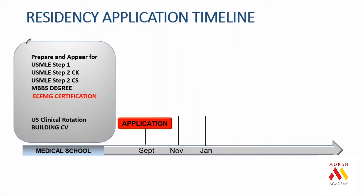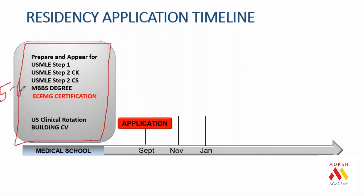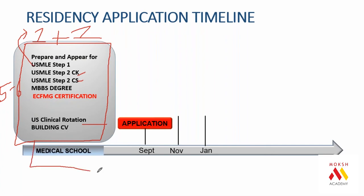The total timeline is five to six years if you do it parallel to your med school. Otherwise you'll spend one year for Step 1, one extra year for CK, CS, clinical rotations, and the internship. Once you have everything, the application starts in the month of September.